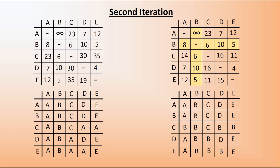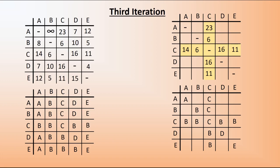We've got three more iterations to go. I would recommend pausing the video to work through the third iteration yourself, then continuing to see if you get the same answer. For the third iteration, we shade the C row and columns and work on our 12 cells. Going through: 29 is smaller than infinite, so there is a change; 7 is smaller, no change; 12 is smaller, no change; 8, 10, 5, 7, 10, 4, 12, 5, 15 — all smaller than their comparisons, no change. So in this iteration, there's only one change necessary.